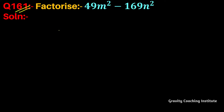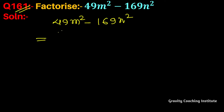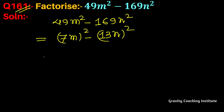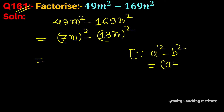Question number 161: factorize 49m² - 169n². We know that 49 is the square of 7, so we have (7m)² minus (13n)², since 169 is the square of 13. Now we use the identity a² - b² = (a + b)(a - b).